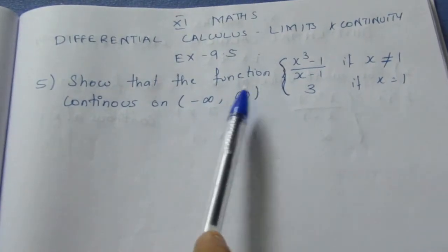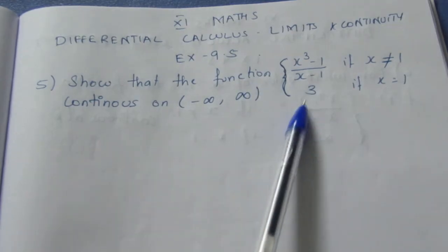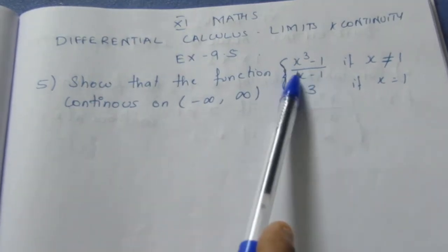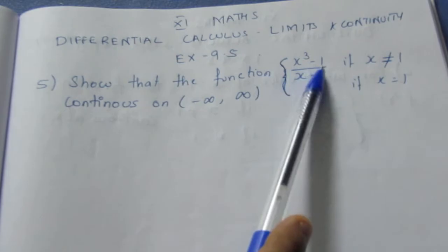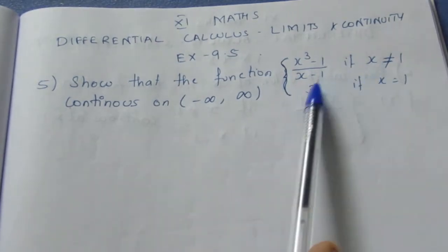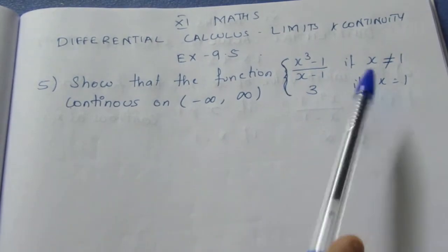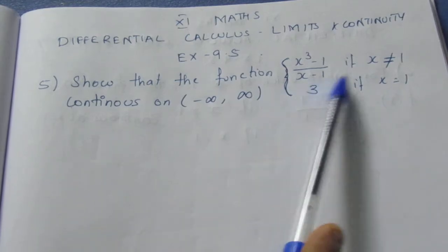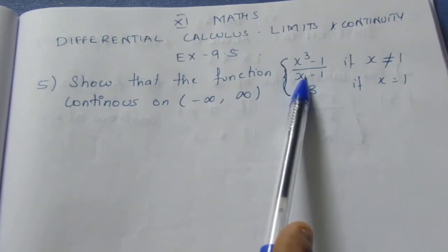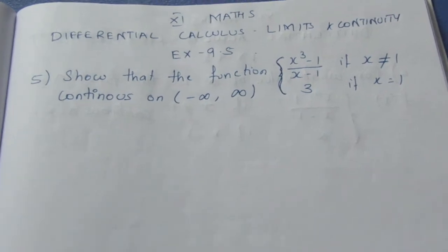From minus infinity to infinity, show that it is continuous. The given function f(x) is: x cube minus 1 by x minus 1, if x is not equal to 1; and 3, if x is equal to 1. When x equals 1, the value is 3. Now let's look at x cube minus 1 by x minus 1.